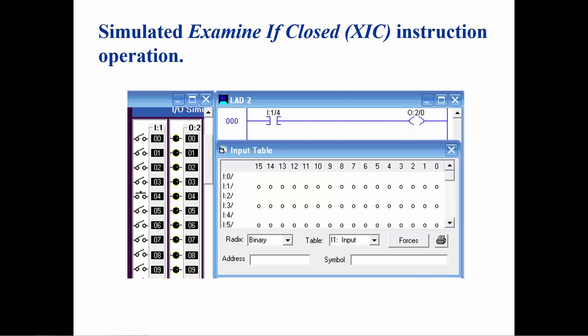When the switch is closed, a 1 is placed in the input table. The examine if closed instruction will allow rung continuity through itself, much like a closed relay contact allows current to flow. The address of the contact turns yellow, indicating logic continuity.